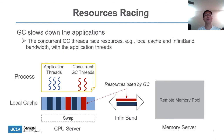The second problem is resource racing between applications and GC. Sometimes the runtime utilizes the concurrent GC phase to reduce GC pause time. For example, G1GC, which is the default GC of Oracle JDK since version 9, has concurrent GC threads that co-run with application threads on the CPU server. This causes them to compete for both the local cache and the InfiniBand bandwidth. As a result, the application is slowed down due to the lack of hardware resources.